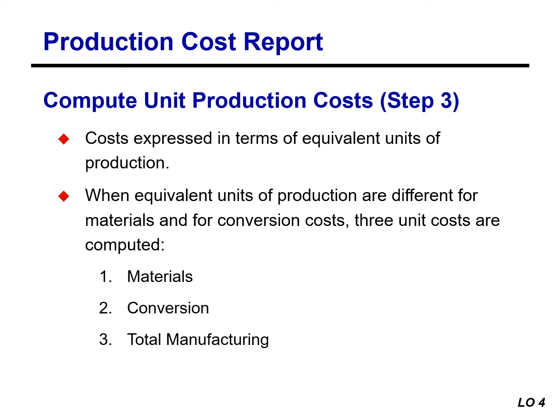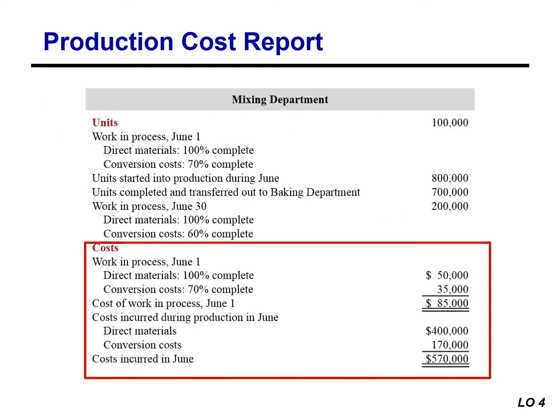Unit production costs are costs expressed in terms of equivalent units of production. When equivalent units of production differ for materials and conversion costs, we compute three unit costs: one for materials, one for conversion, and a third for total manufacturing cost. The basic idea in process costing is to add all costs incurred in a department during a period and spread those costs uniformly to all units processed. Manufacturing costs are assigned to equivalent units rather than to physical units.